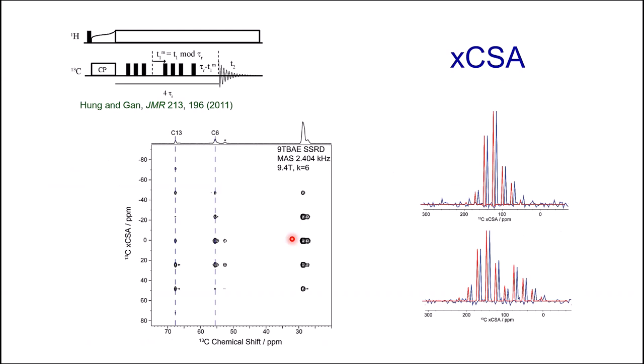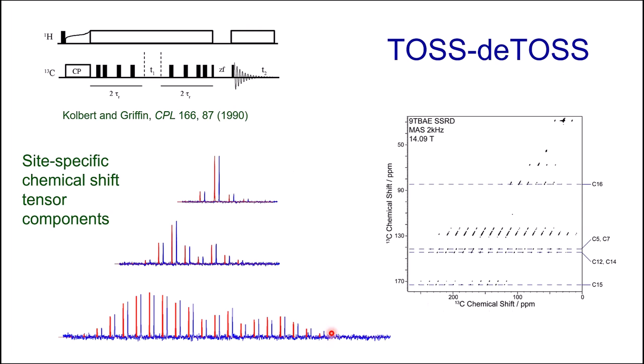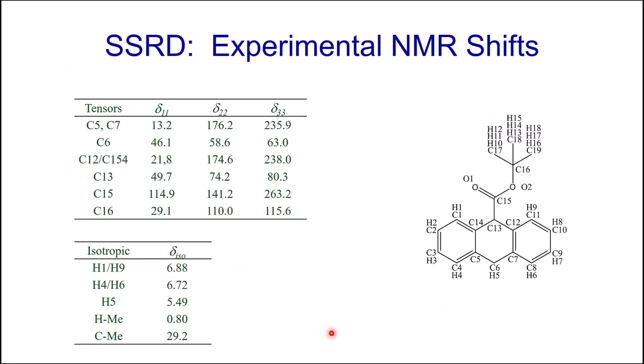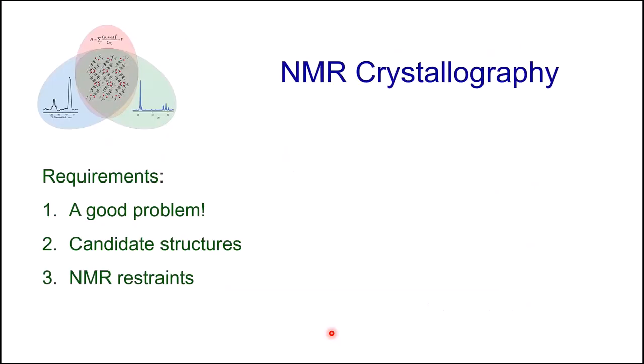The CSA amplification experiment amplifies the effect of CSA relative to the MAS rate and preserves sideband intensity, so I can still fit these using standard Herzfeld-Berger analysis. The fit shown in red and experimental data in black show the tight agreement you should expect when doing chemical shift tensor fits — and similarly for the TOSS-deTOSS experiment. From all these experiments we have isotropic and tensor chemical shift components: that's requirement three — NMR restraints.